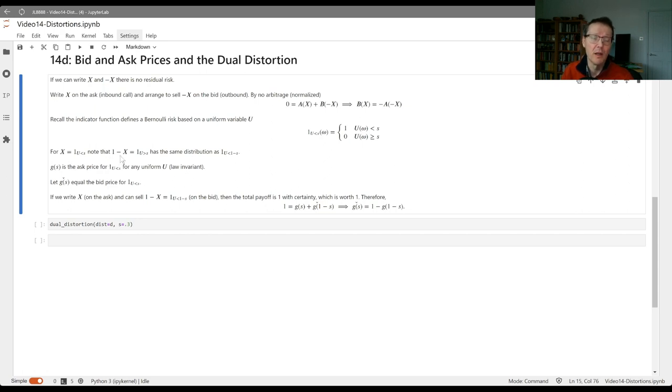Our complementary product that pays one when the temperature is less than 28 degrees, so that's one minus the contract that pays one when the temperature is above 28 degrees. That is the indicator function on u is greater than s, because either u is less than s or greater than s. And that then has the same distribution as an indicator function on one u less than one minus s, because the probability that this one u greater than s takes the value one is one minus s, because it's the complement. Our distortion, we've essentially defined as the ask price for a risk with probability s, which we can think of as one u less than s for some uniform variable. And again, it doesn't matter which uniform variable, because it's law invariant, they're all going to be the same. It's only determined by the distribution function.